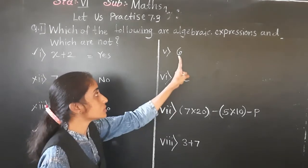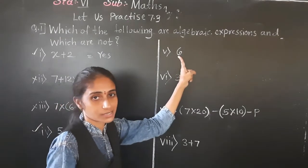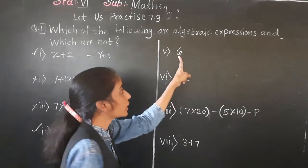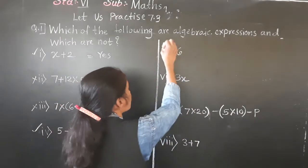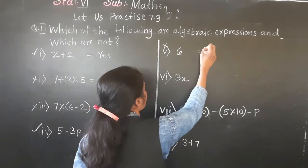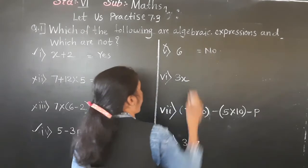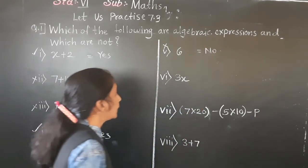The fifth example: just the number 6. Only a constant is given; no variable. So this is not an algebraic expression.